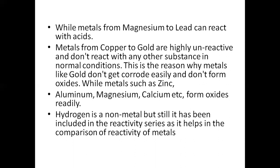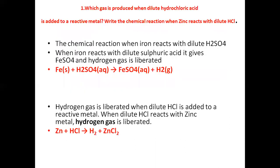Now your worksheet has some questions. First question: which gas is produced when dilute Hydrochloric Acid is added to a reactive metal? Write the chemical reaction when Iron reacts with dilute H2SO4. When Iron reacts with dilute Sulphuric Acid, it gives FeSO4 and Hydrogen Gas is liberated. जब Iron को H2SO4 के साथ react किया तो FeSO4 और Hydrogen Gas liberate हुई।